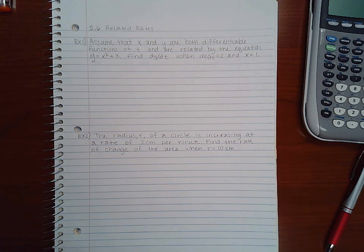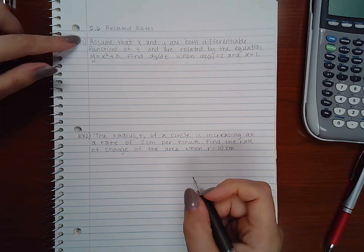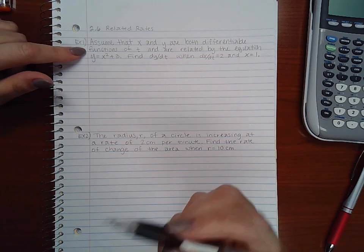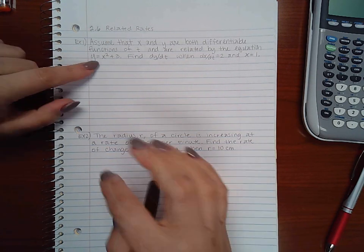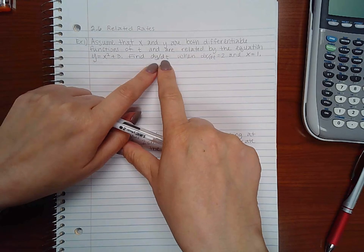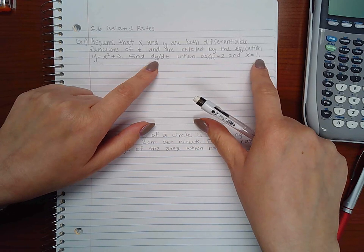Primary equation being the equation I have to take the derivative of and a secondary equation. So for instance, this particular problem says assume that x and y are both differentiable functions of t and are related by the equation. Find dy/dt when dx/dt equals 2 and x equals 1.